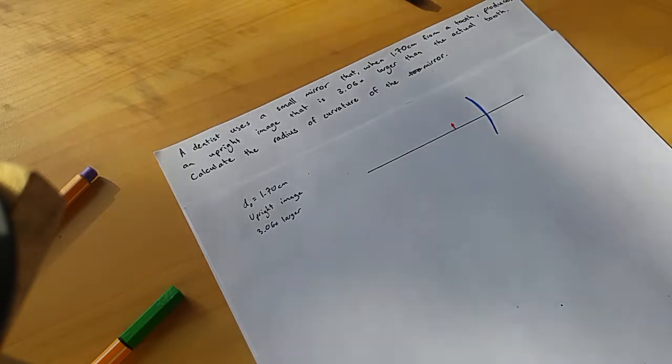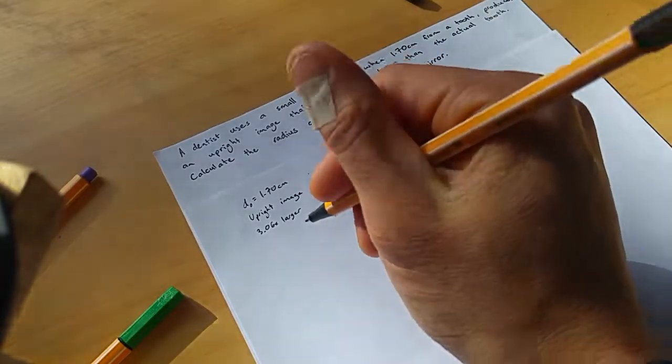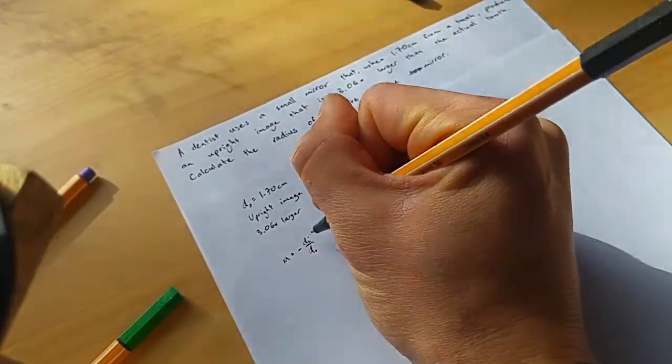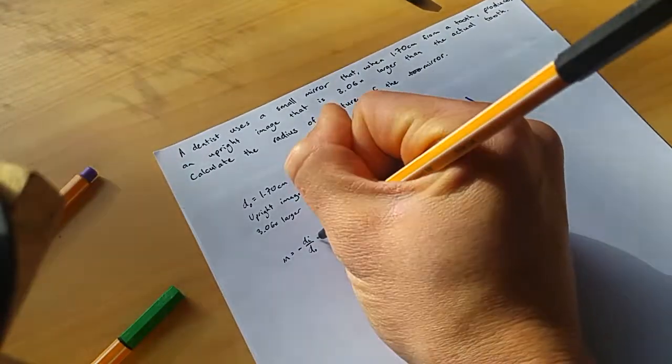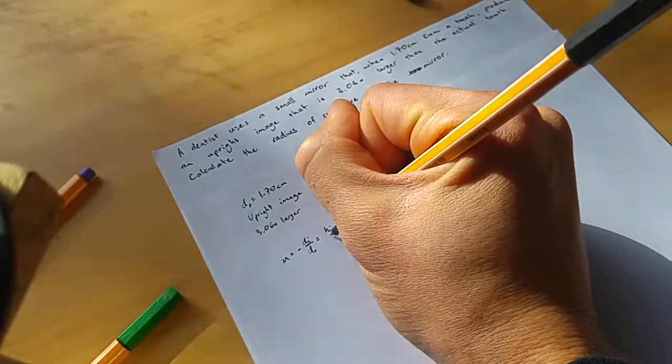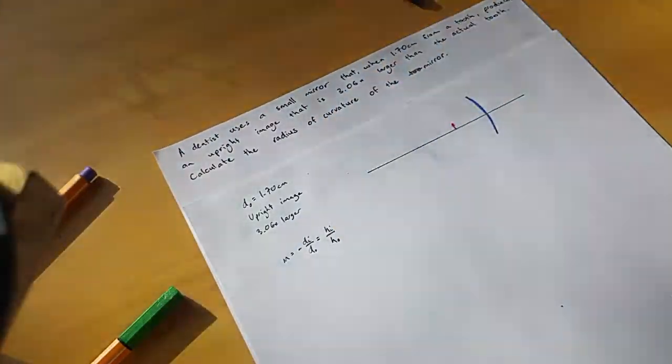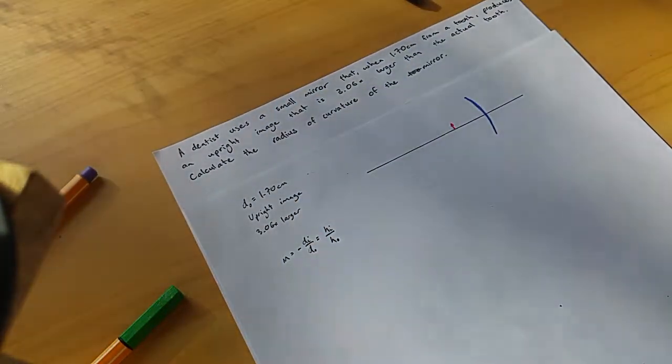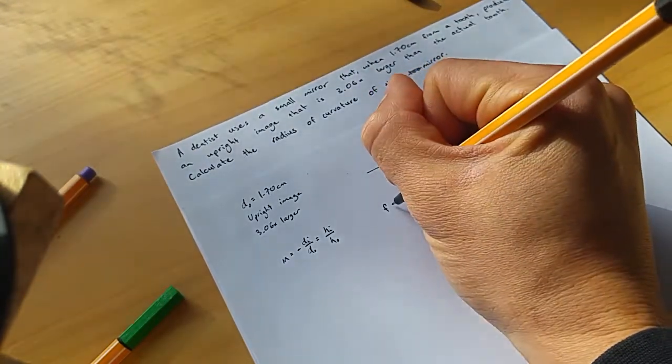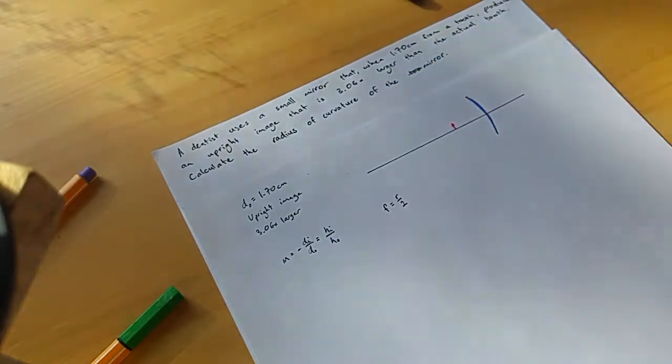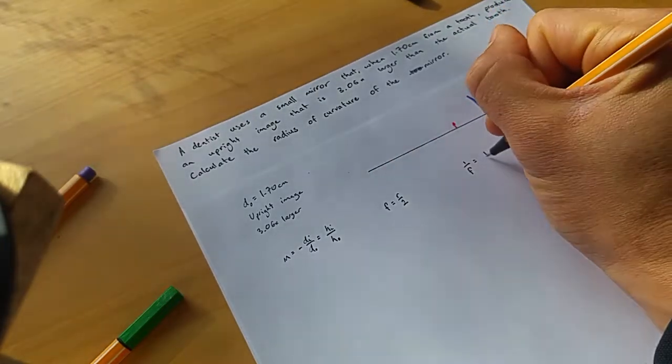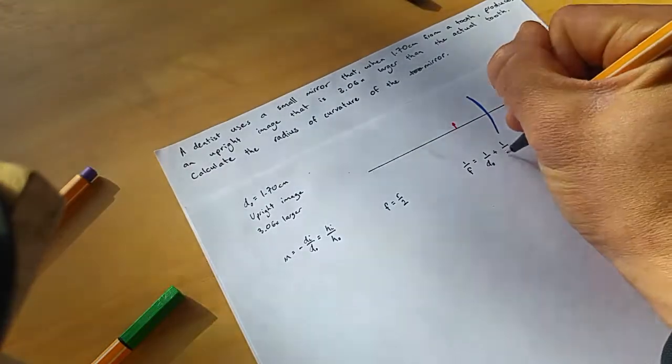Now, which equation am I going to use? Well, I'm just going to write down all the equations that I know for ray diagrams. The first one is magnification equals negative DI over DO. That's the image distance divided by the object distance. And that's equal to the image height versus the object height. I also know that the focal length is equal to the radius divided by 2. And I know that 1 over the focal length is equal to 1 over DO plus 1 over DI.